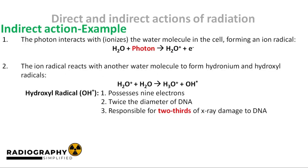Here we have a typical example of the indirect action of radiation. The photon ionizes the water molecule in the cell — it knocks out an electron from the water molecule, turning this water molecule into an ion radical, which is the H2O+ you see on your screen. This ion radical, which is highly reactive, then proceeds to react with another water molecule to form hydronium and hydroxyl radicals. The hydroxyl radical is very interesting because it is larger in diameter than the DNA and is able to cause over 60% of X-ray damage to the DNA.